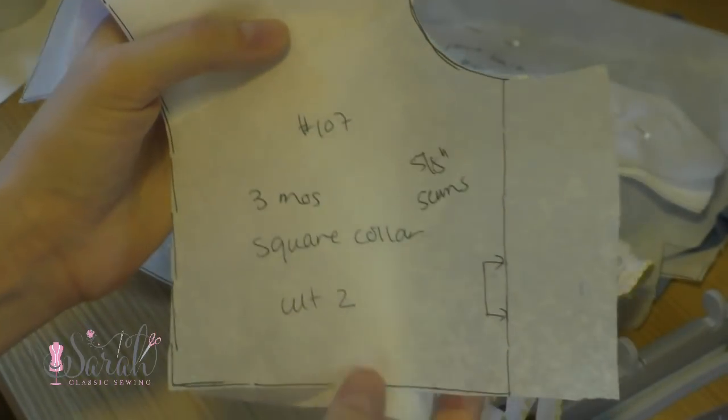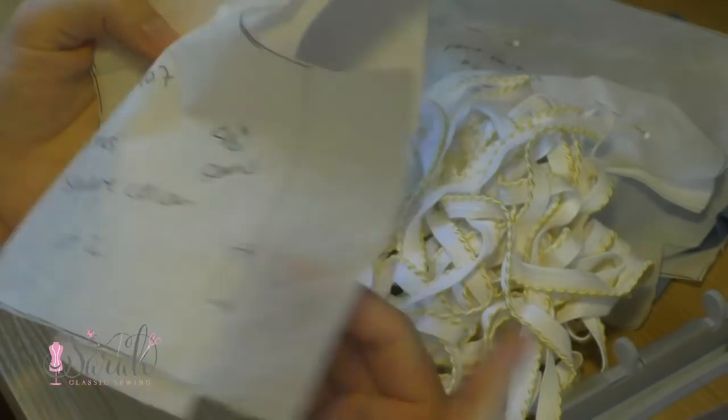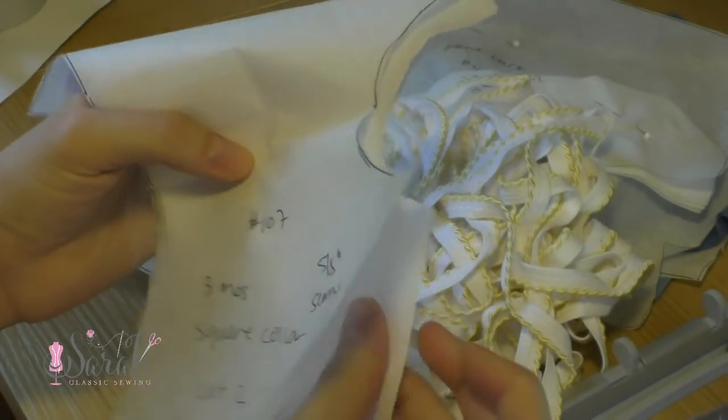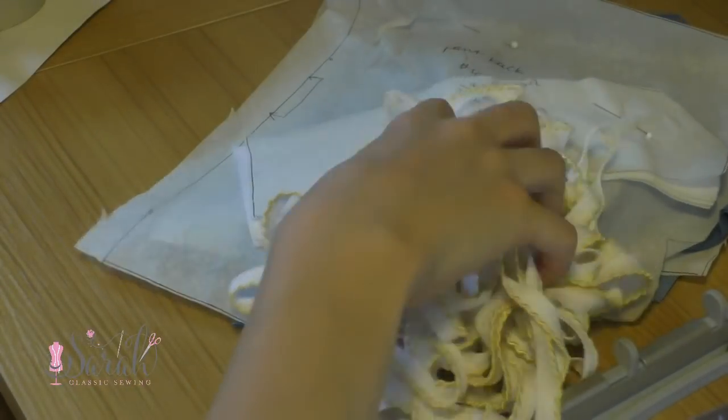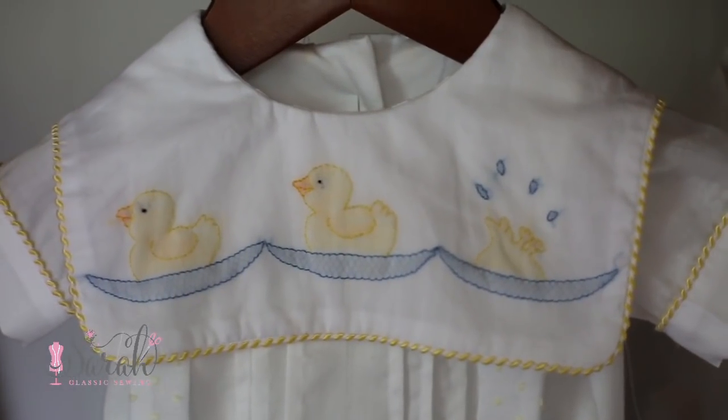So if you decide to do the square collar like I did, you'll have two of these to cut out. If you did the pointed collar, you'll have four. And if you didn't do a collar, you can just skip those pieces.